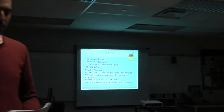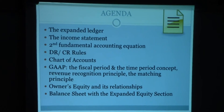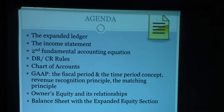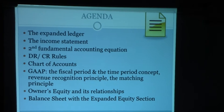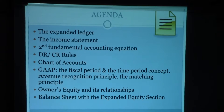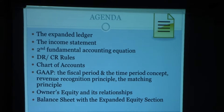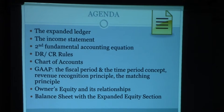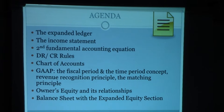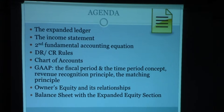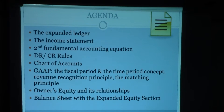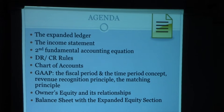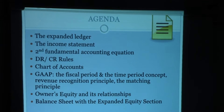The agenda covers a few items: the expanded ledger, the income statement — the second critical financial statement, the first being the balance sheet — the second fundamental accounting equation, debit and credit rules as they apply to the expanded ledger, chart of accounts, accounting principles including the fiscal period, the time period concept, revenue recognition principle, and the matching principle. We will also talk about owner's equity and how the equity section looks with the expanded ledger.